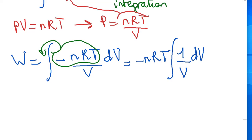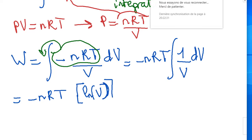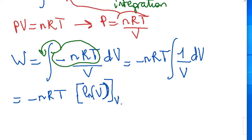We are used to this kind of equation — it's just the primitive we need to compute. The primitive of 1 over x in mathematics is ln(x), but we have V instead of x. So we write the result as minus nRT times the primitive of ln(V). Now we specify the boundaries: they are the volumes of the system, from the initial to the final situation — V1 for the initial and V2 for the final.